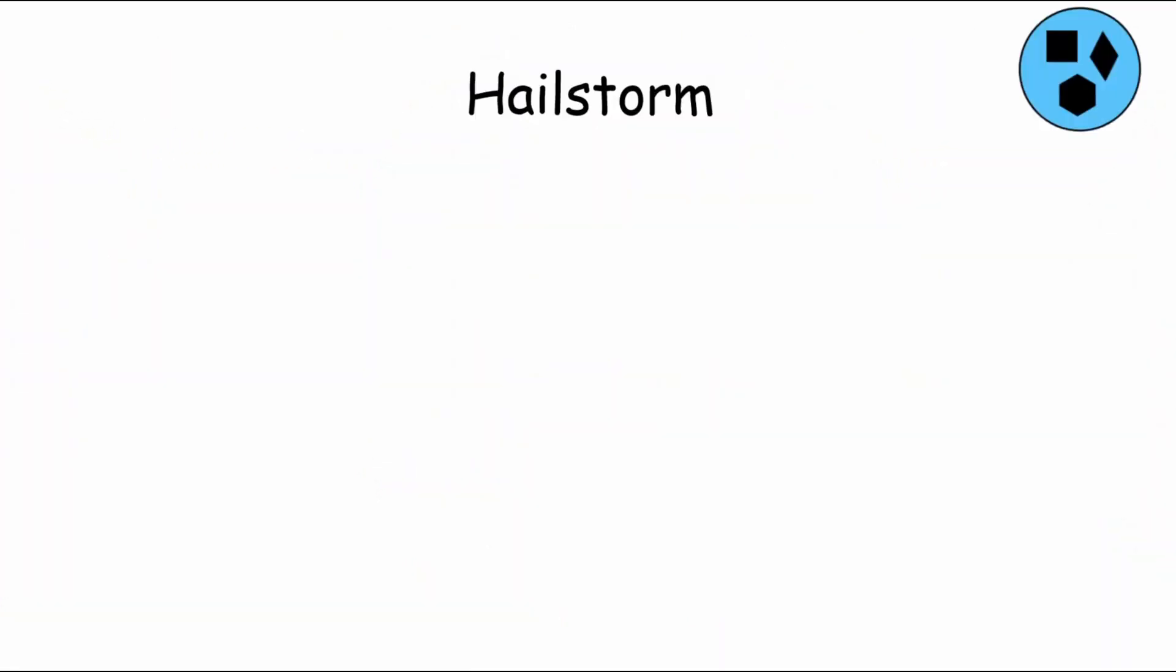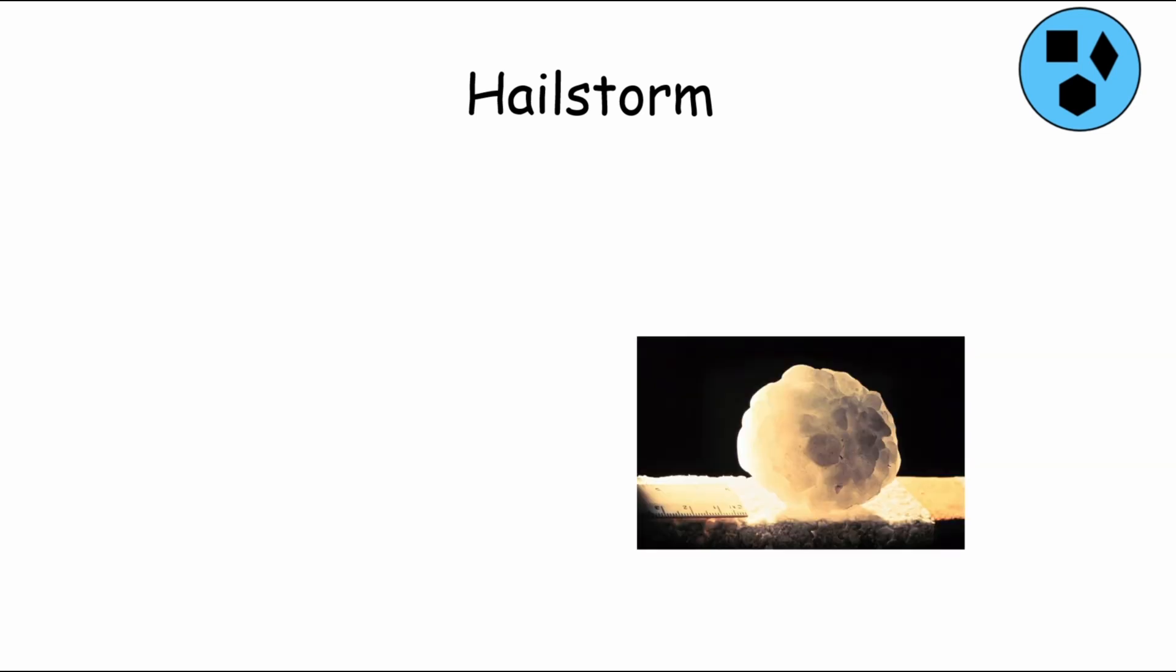A hailstorm is a weather phenomenon characterized by the formation and precipitation of hailstones, which are solid balls or lumps of ice. These storms typically occur within thunderstorms with strong updrafts that carry raindrops to high altitudes where temperatures are below freezing. As the raindrops freeze, they accumulate layers of ice, growing in size until they become too heavy for the updrafts to support and fall to the ground as hail. Hailstones can vary in size from small pellets to large chunks several inches in diameter. Hailstorms are most common in regions with strong convective activity, such as the central United States.